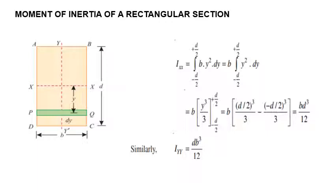Similarly, we can get the moment of inertia about the YY axis, which is DB cubed by 12. To get this, we take a strip parallel to the YY axis and integrate between the limits minus B by 2 to plus B by 2, giving IYY equal to DB cubed by 12.